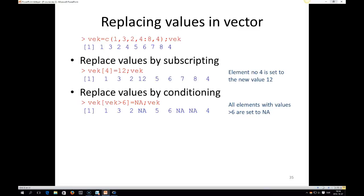You can replace values in vectors in different ways. In this case you have a vector with the numbers 1, 3, 2, 4, 5, 6, 7, 8, 4. If you want to replace the values you could do this by subscripting. You could say that in vec you would like value number 4 to be equal to 12, and then R would replace the fourth number by 12.